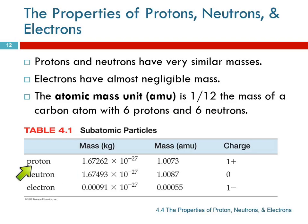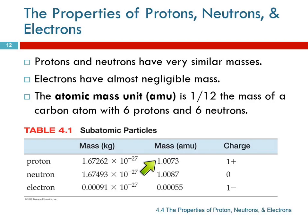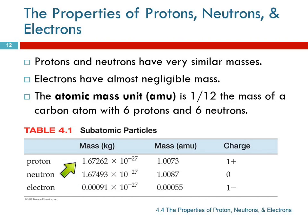A proton in atomic mass units has a mass of 1.0073. For our purposes, you can think of that as 1 — a proton has a mass of 1 atomic mass unit. A neutron also has a mass of about 1 atomic mass unit. The difference in mass between them is very small; sometimes it matters, but in most of our calculations it will not matter at all.